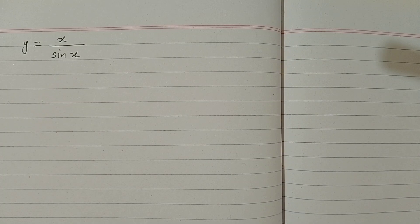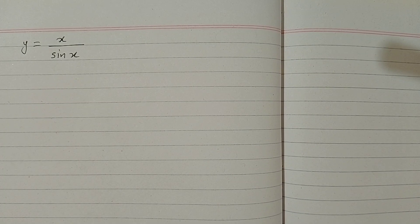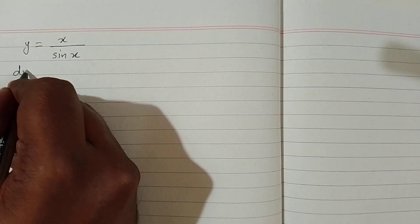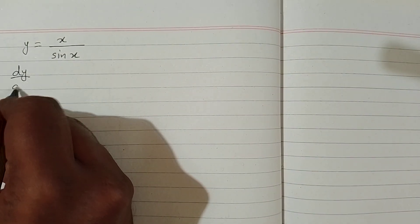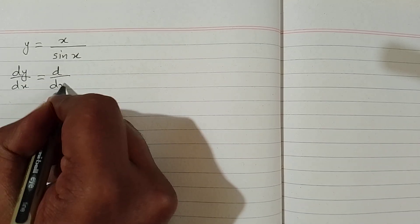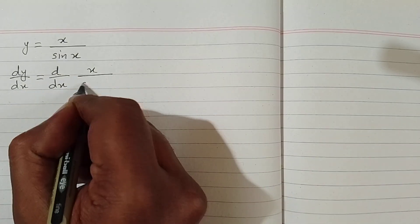In this video we will find the derivative of the function y equals x over sin x. First of all, we will take the derivative of both sides with respect to x. So we have dy/dx equals d/dx of x over sin x.